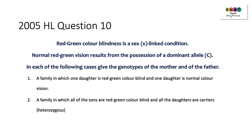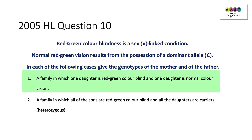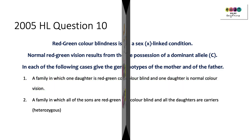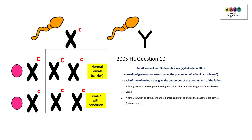Here's another question from 2005, Higher Level, Section C of Question 10. Red-green colour blindness is an X-linked condition — so the gene is on the X chromosome. Normal red-green vision results from the possession of the dominant allele, and here they've given you the letter C to use. In the first case, give the genotypes of the mother and father for a family in which one daughter is red-green colour blind and one daughter is normal. Start by drawing your Punnett square. You've been told there are two daughters so you write in two X's — female is XX, with one X from the mother and one from the father.